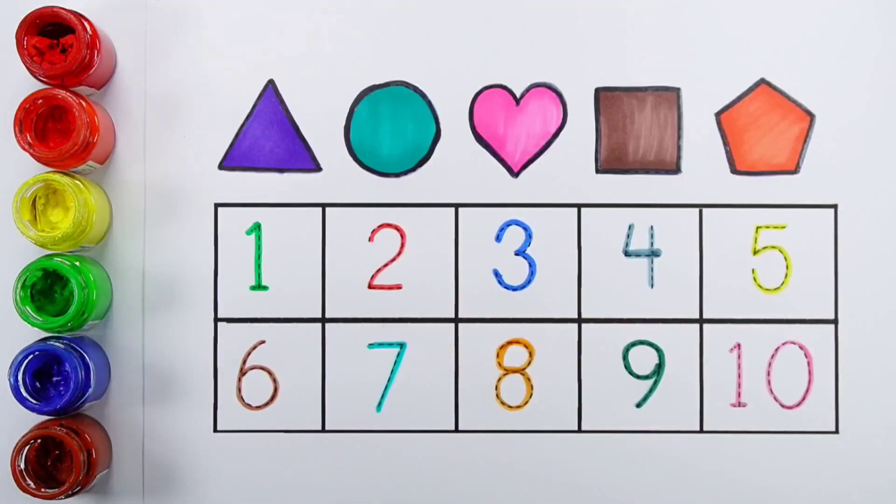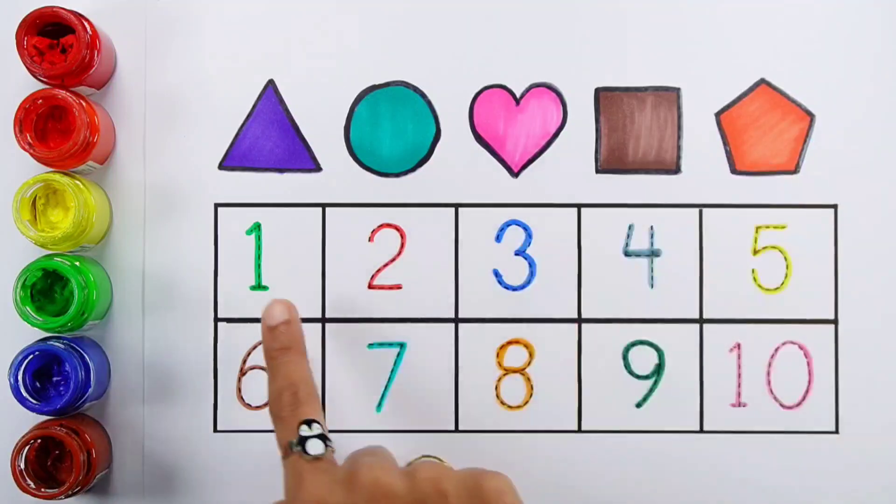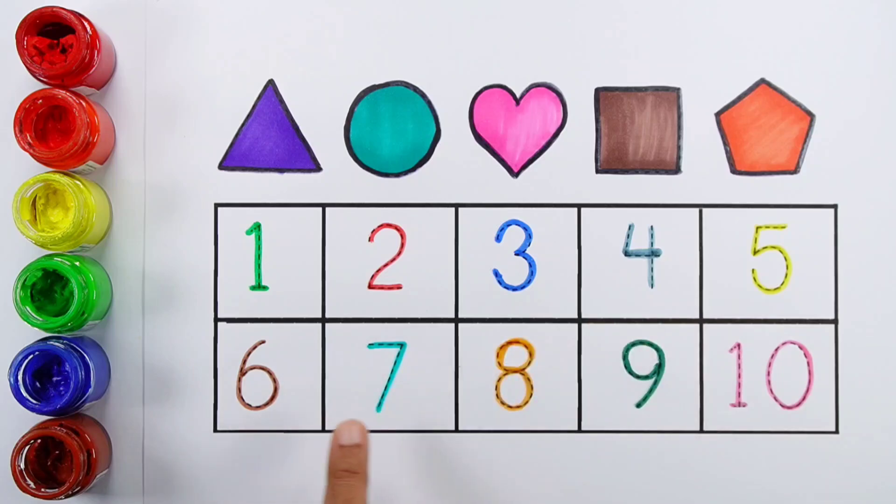Hello guys. Triangle, circle, heart, square, pentagon. 1, 2, 3, 4, 5, 6, 7, 8, 9, 10.